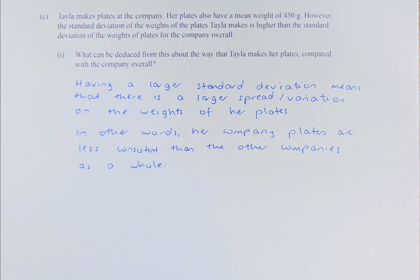Taylor makes plates at her company. Her plates have a mean weight of 450, which is the same as the previous example in part A and part B. However, the standard deviation of the weight of the plates Taylor makes is higher than the standard deviation of the plates for all the company overall. What can be deduced about the way Taylor makes her plates compared with the company overall?